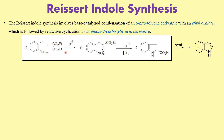Since this reaction is catalyzed by a base, one thing to remember: since we are using ethyl oxalate, the base has to be either potassium ethoxide or sodium ethoxide in ethanol as a solvent. After this condensation, what you end up getting is the formation of a substrate which is subjected to reductive cyclization to give you the indole-2-carboxylic acid derivative.